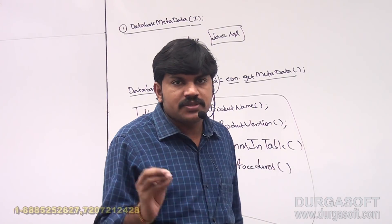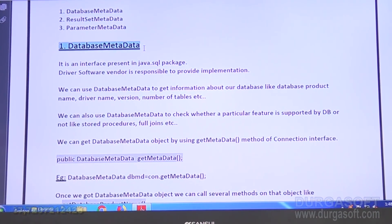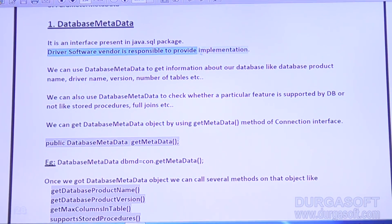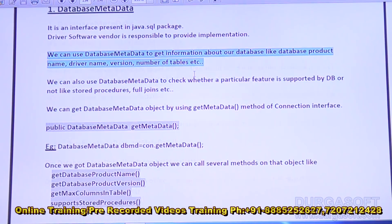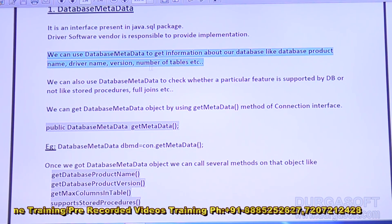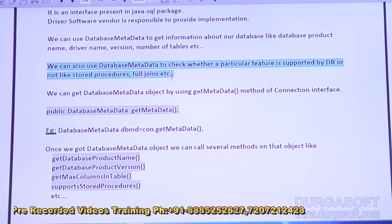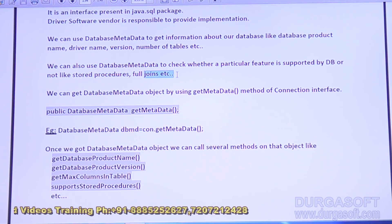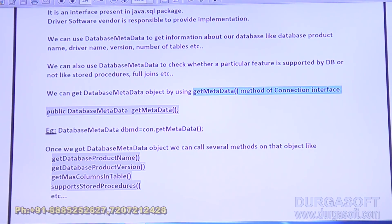Looking at the material: DatabaseMetaData is an interface present in java.sql package, and the driver software vendor is responsible to provide the implementation. We use DatabaseMetaData to get information about our database such as product name, driver name, version, number of tables, etc. We can also check whether a particular feature is supported by the database, like stored procedures or outer joins.